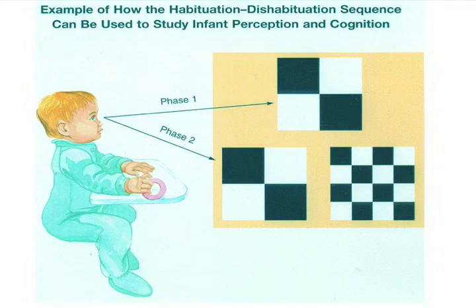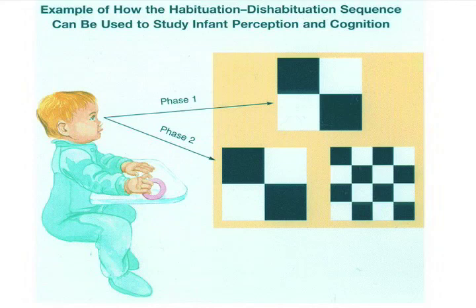This slide shows an example of figuring out whether infants can tell the difference when there are four squares — two white and two black — versus 16 squares of eight white and eight black in the lower right-hand corner in phase two. If they have enough visual acuity to tell the difference between the two, then they should get really bored with the four-square ones, and then when the 16-square checkerboard shows up, they should start looking at it again and get interested.